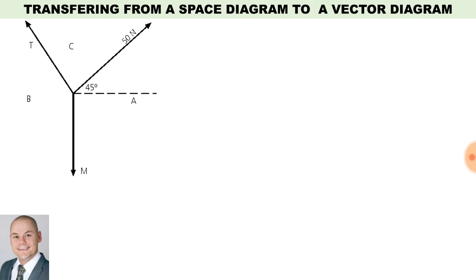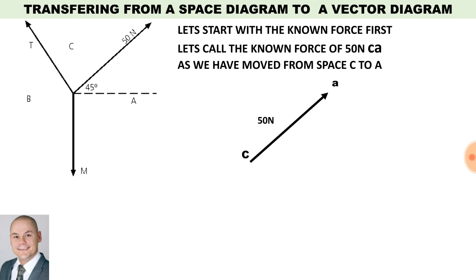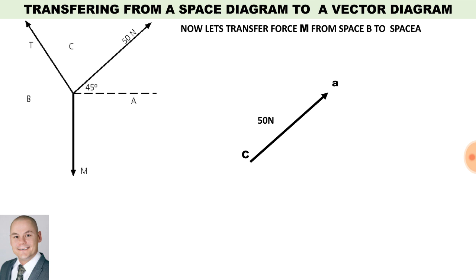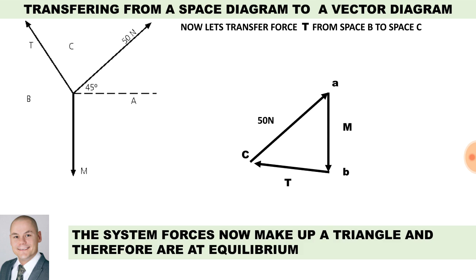Transferring a space diagram to a vector diagram: we have an unknown force T, a force of 50 Newtons at an angle of 45 degrees, and spaces A, B, and C. Starting with the known force of 50 Newtons, we call this force CA as we have moved from space C to space A. Transferring the known force M from space B to space A, the line represented is AB. Transferring force T from space B to space C, the system of forces now makes up a triangle and is therefore considered to be at equilibrium.